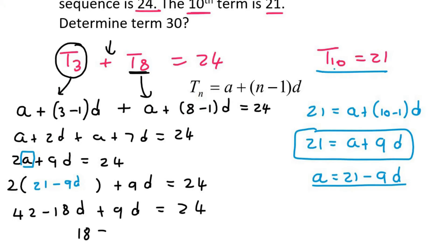You would eventually get 18 is equal to 9D. Therefore, if you divide, D is 2. You could then plug that over here to find A. And we'd see that A is 21 minus 9. And then we said D is 2. And so A would end up being 3.